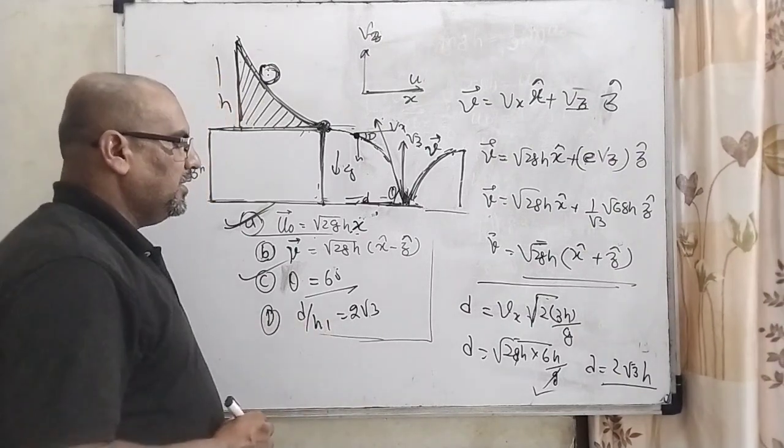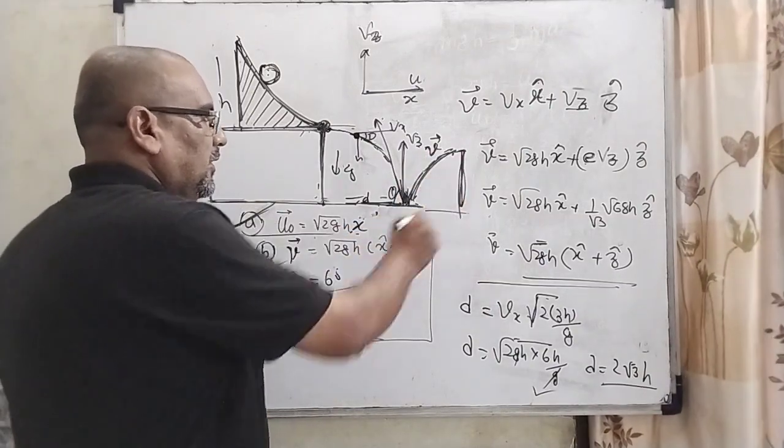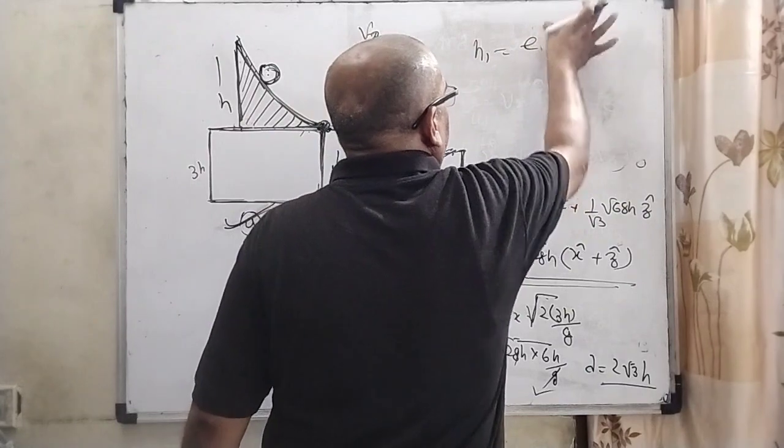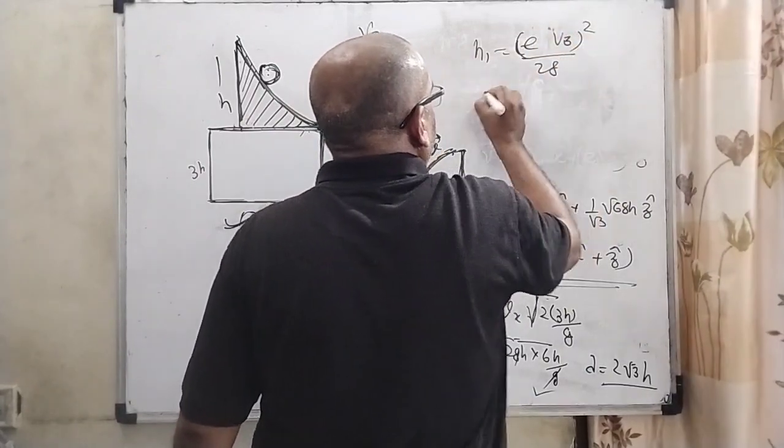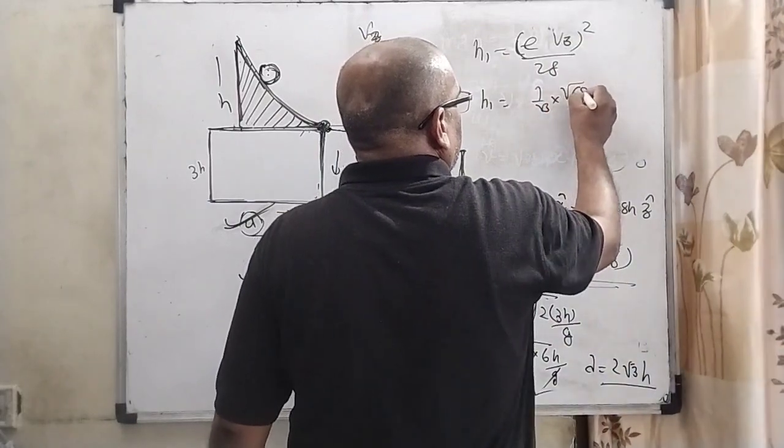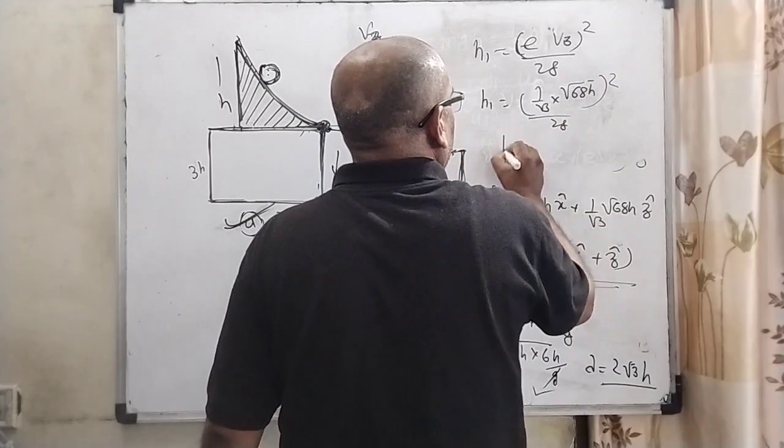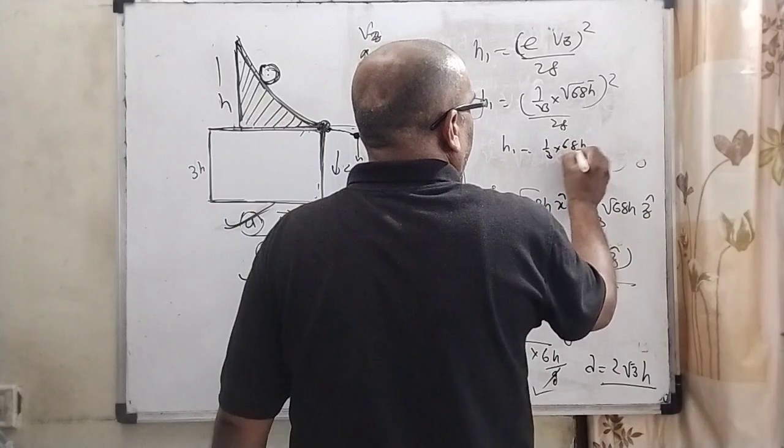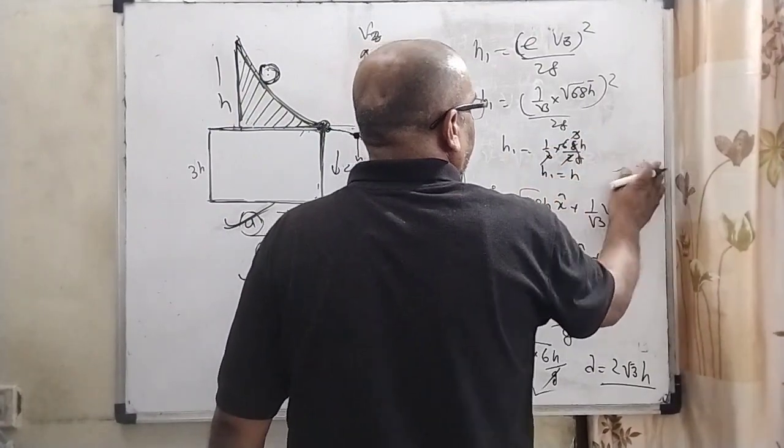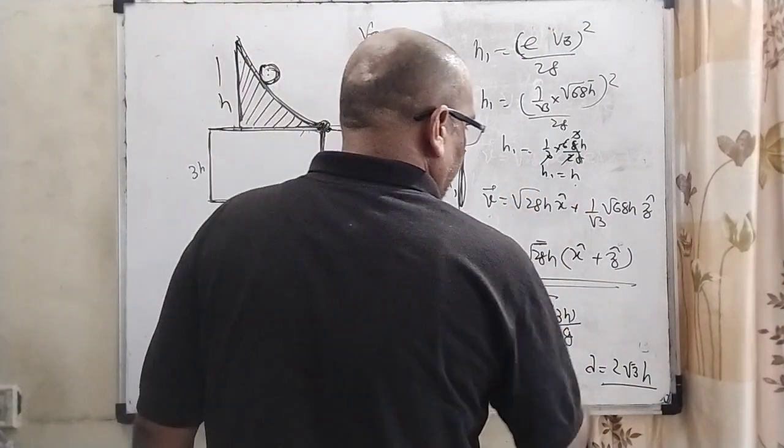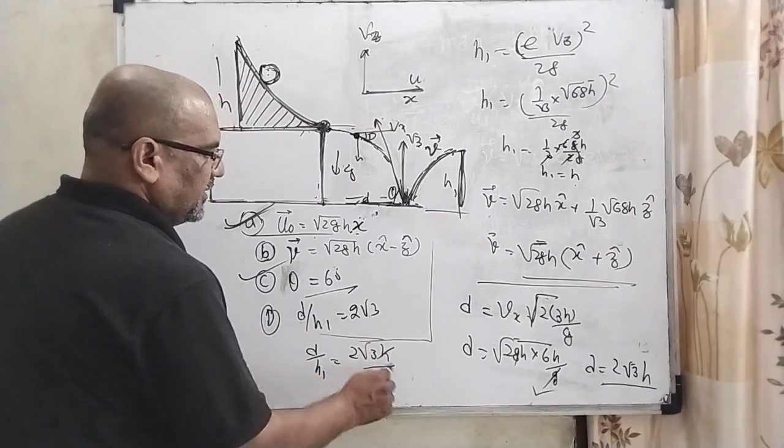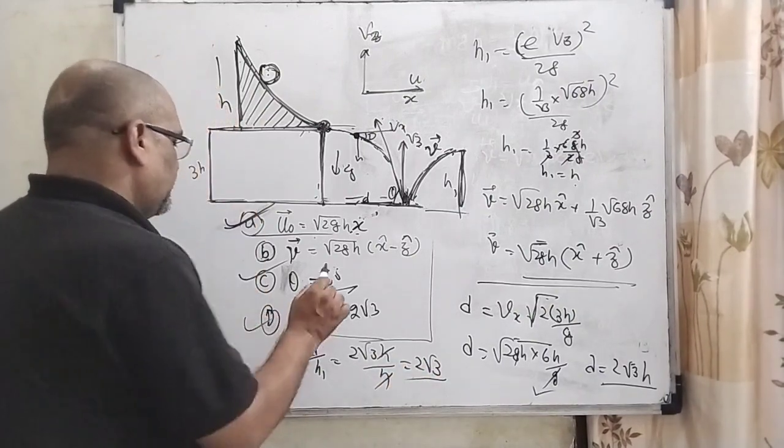Now we find h1, which is the maximum height. Using the formula h1 equals e times vz whole squared upon 2g, we substitute e equals 1 by root 3 and vz equals root 6gh. This becomes 1 by 3 times 6gh upon 2g. After simplification, h1 equals h. Therefore, the ratio d by h1 equals 2 root 3h upon h, which equals 2 root 3. So option D is also correct.